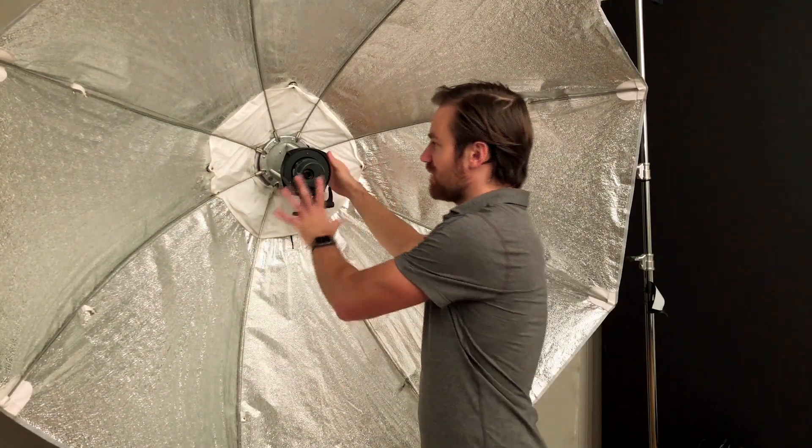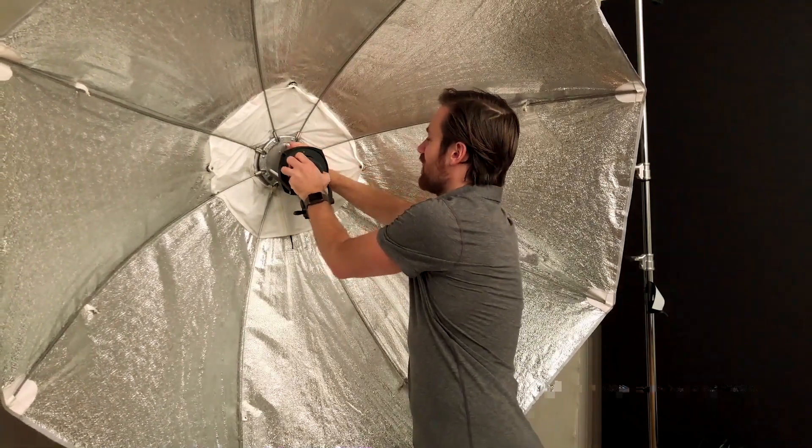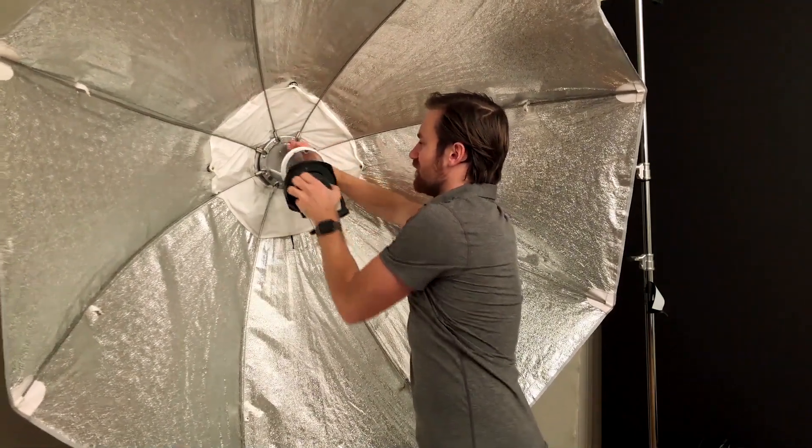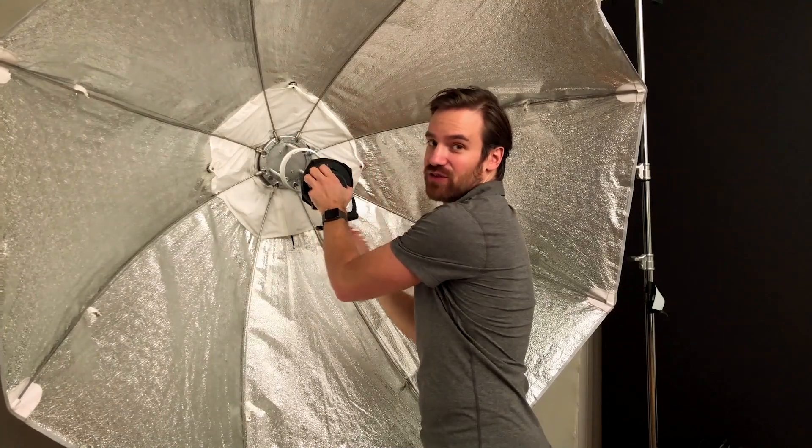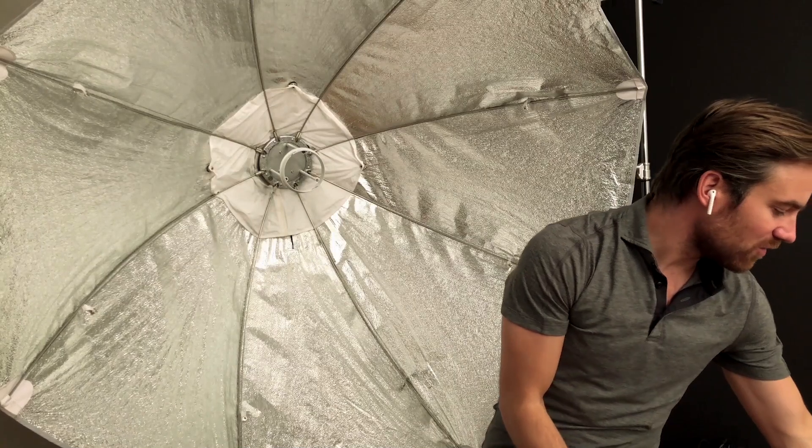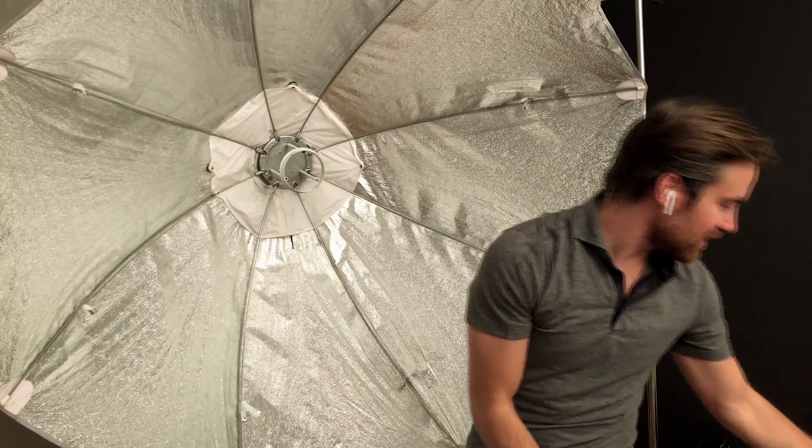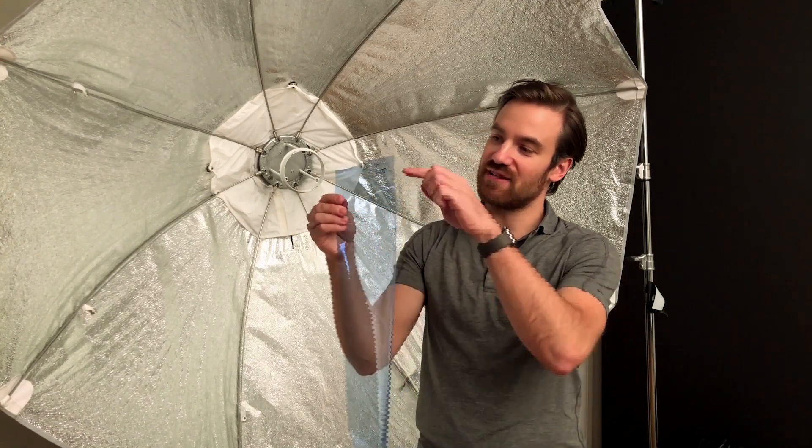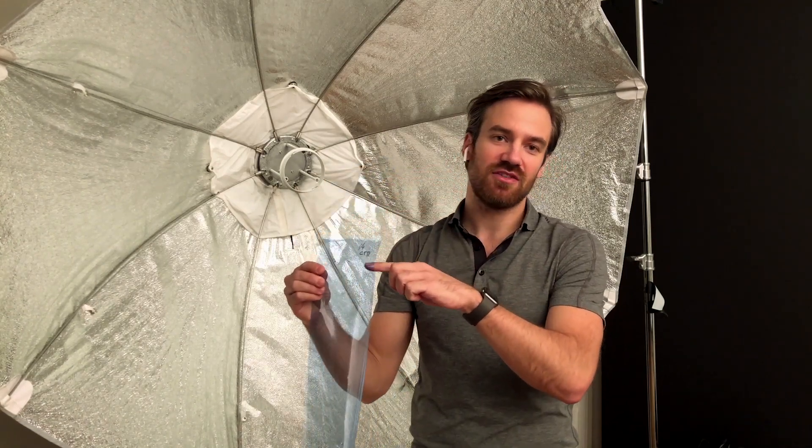So this is the 150 centimeter deep dish Rotalux by Elinchrom, and this one's reverse mounted, so I've left the head in here so I can show you how that's mounted into the back here. I show this also in the one light video in the lighting series. I'm going to take that off so you guys can see more clearly what's happening here. So I've got my five and three-quarter inch strip and I've labeled quarter CTB on here to avoid confusion, so I know what the gel is later on.